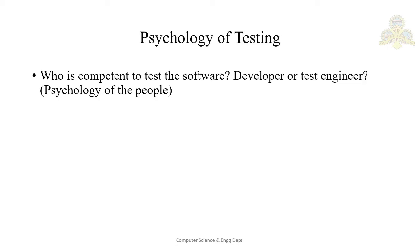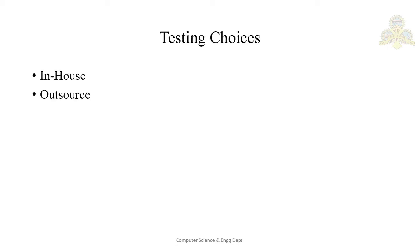Test engineers need to communicate their results to developers in such a manner that the developer's feelings are not hurt — they should not be disrespectful. Developers need to appreciate that code written by anyone can have defects. That covers the psychology of testing — the developer's psychology, the tester's psychology, and the advantages of each doing the testing.